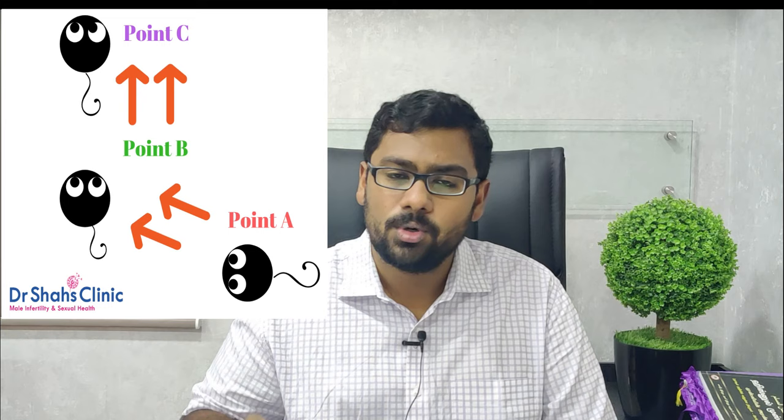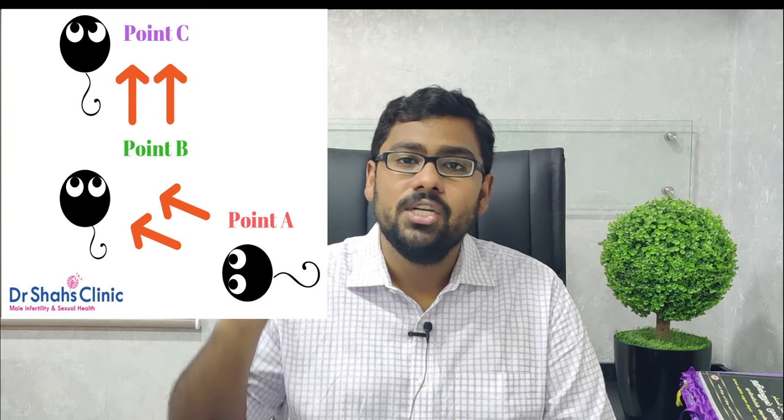Point number three is sperm progressive motility. A progressively motile sperm is one that actually moves from one field to another. As shown in the image on the right, it is scored as progressively motile if it moves under the microscopic field from point A to point B. You need at least 32% of progressively motile sperms in your semen sample; any value from about 31% to 36% is considered acceptable, with the cutoff value being 32%.